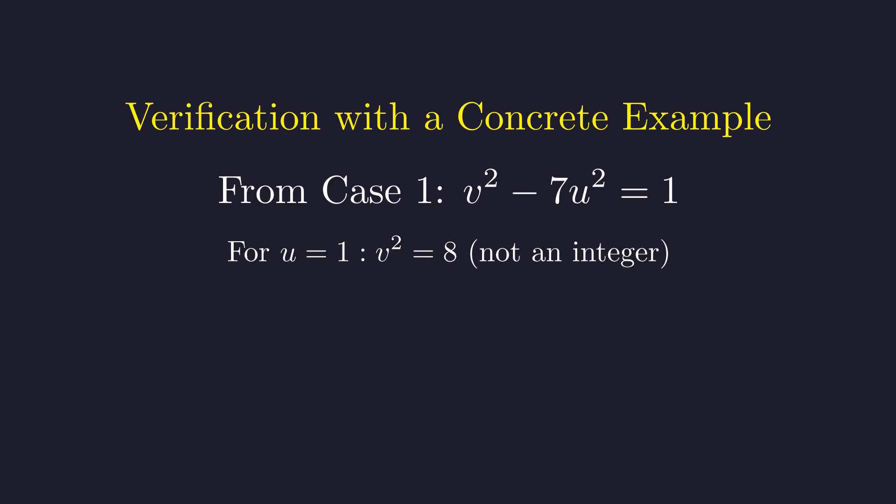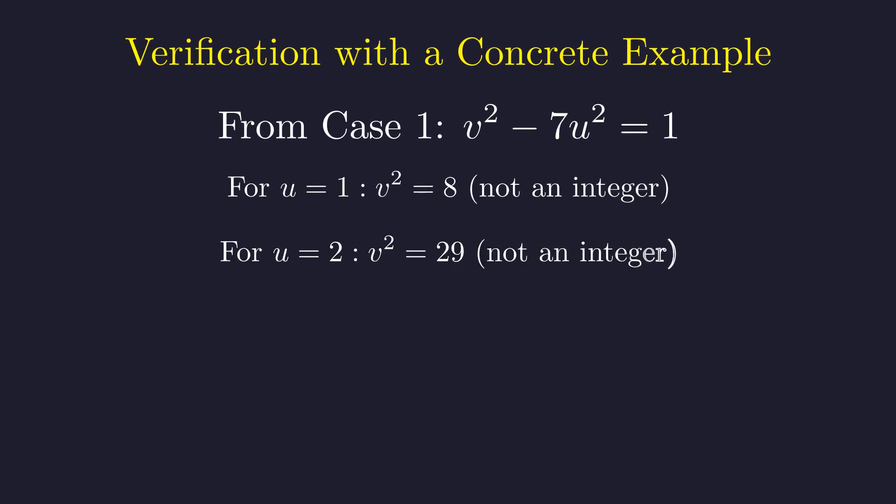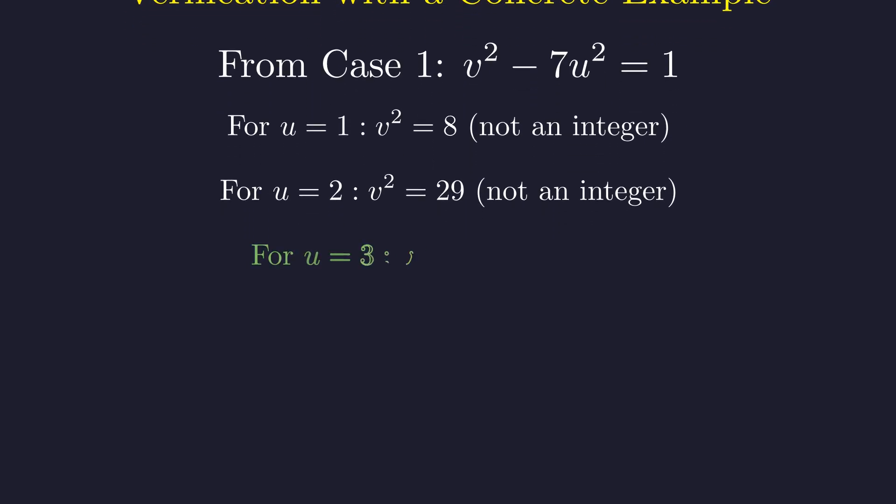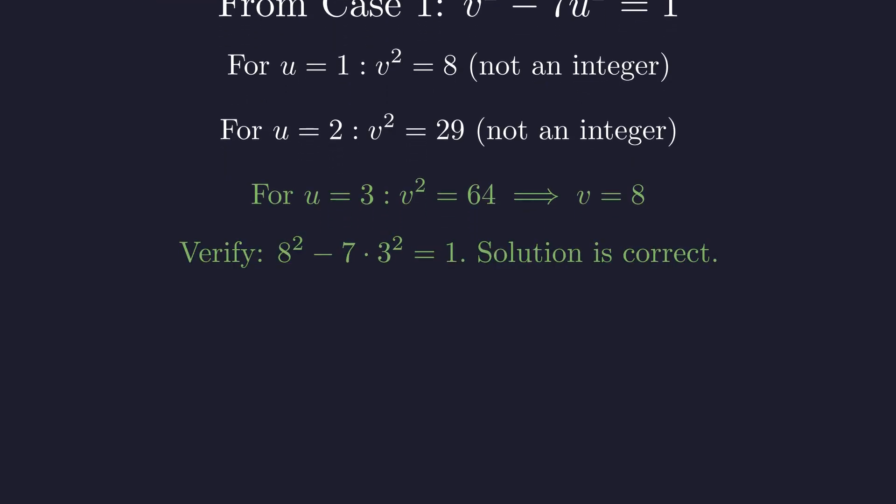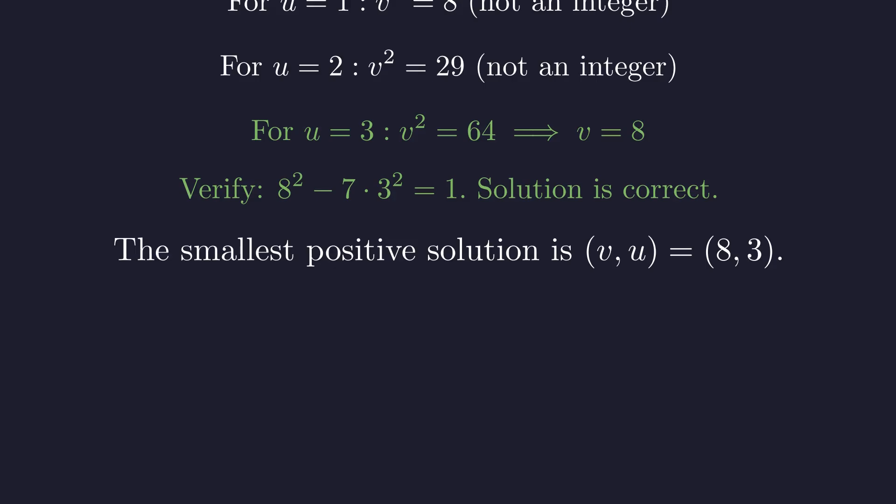If u is 1, v² equals 8, which is not a perfect square. If u is 2, v² equals 29, also not a perfect square. If u is 3, v² equals 64. This gives an integer solution, v equals 8. Checking the solution: 8² minus 7 times 3² equals 1. The solution is correct. Therefore, the smallest positive integer solution is (v, u) equals (8, 3).